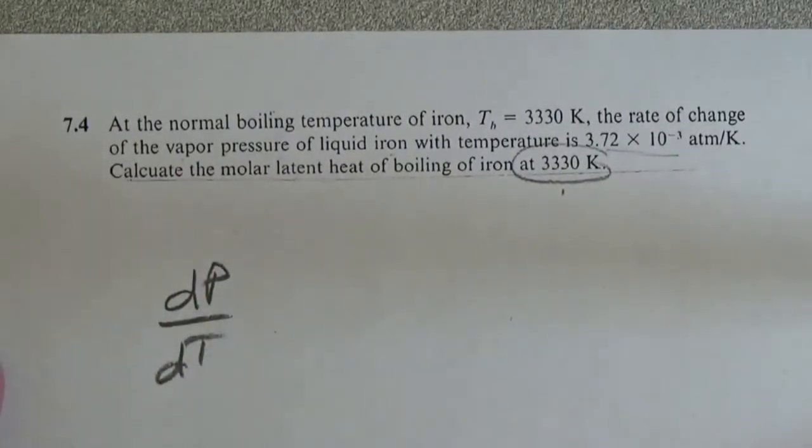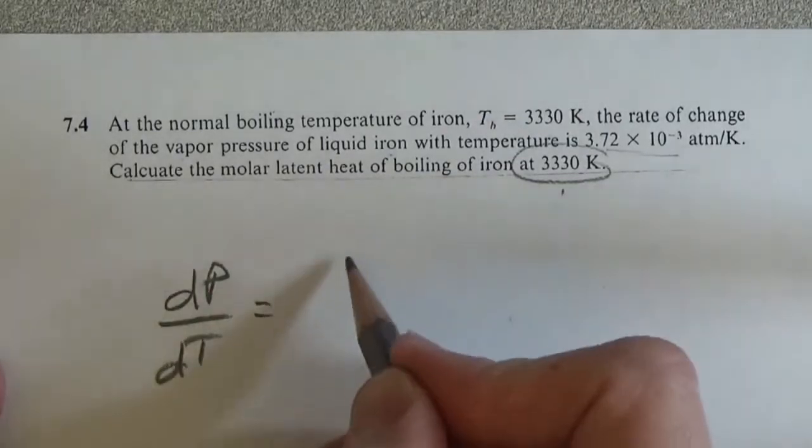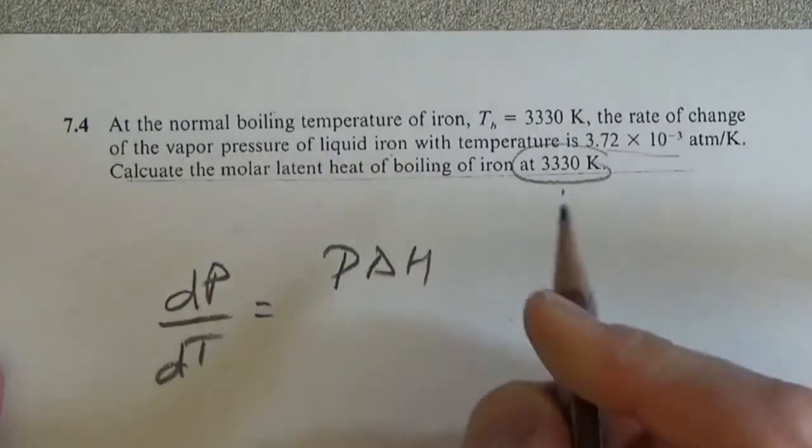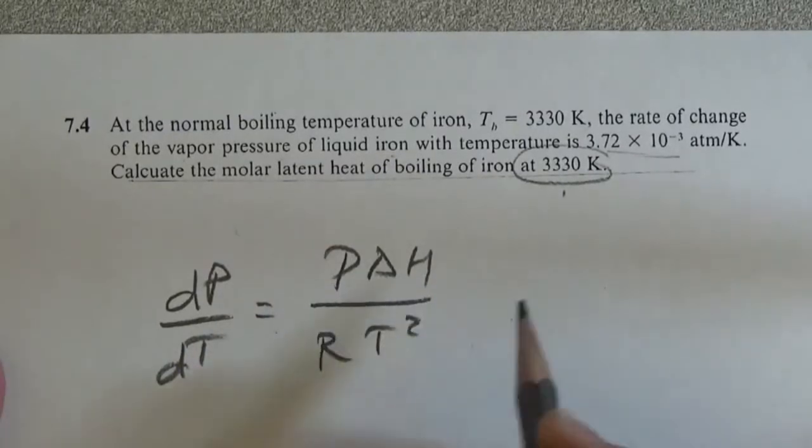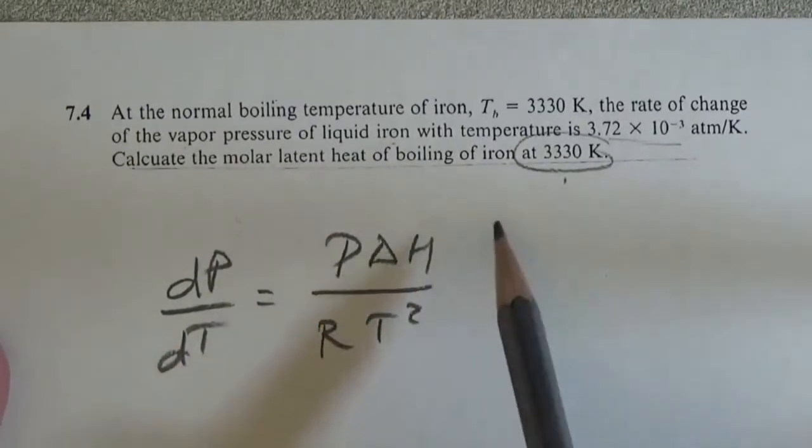dp by dt is equal to p delta H over R T squared.